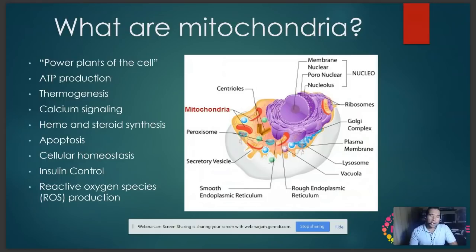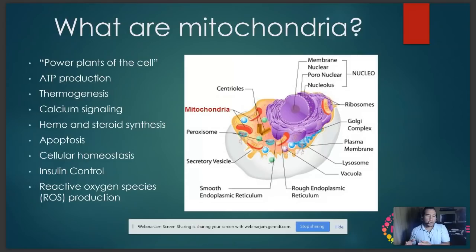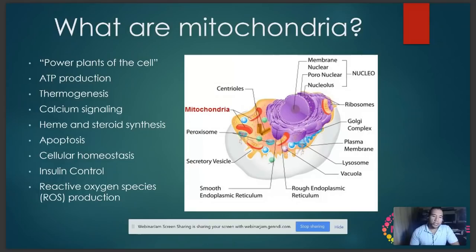Mitochondria also produce reactive oxygen species, ROS, which is a subsequent metabolite of regular cellular respiration. Throughout the process of making ATP, mitochondria inevitably produce ROS. ROS has some functionality within the cell, but for the most part it's a waste product that needs to be quenched, because ROS can be quite toxic — it can interfere with DNA, proteins, glycoproteins, and lipids, causing dysfunction in the cell and mitochondria.